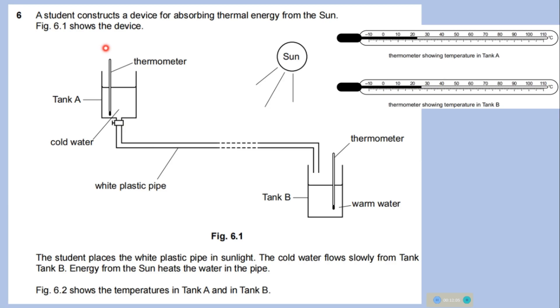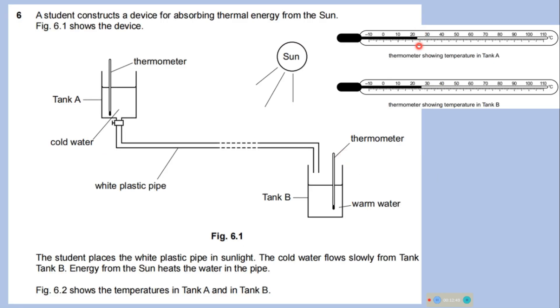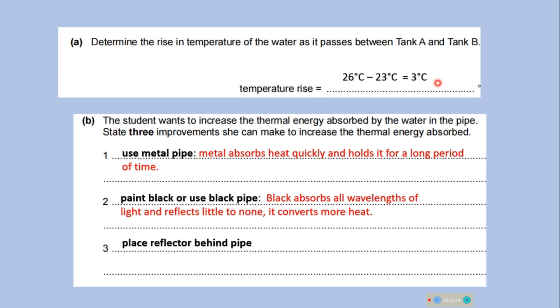A student constructs a device for absorbing thermal energy from the sun. This figure shows the device. The student places a white plastic pipe in sunlight. This is the pipe. The cold water flows from tank A to tank B. Energy from the sun heats the water in the pipe. This figure shows the temperature. These are the temperatures in tank A and tank B. Determine the rise in temperature of the water as it passes tank A and tank B. So, temperature rise is equal to definitely the difference in the temperature between these two readings. So, it is equal to 3 degree centigrade.